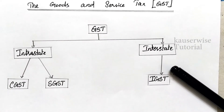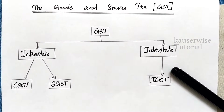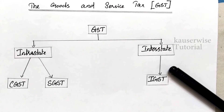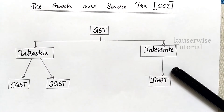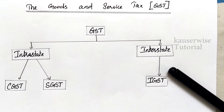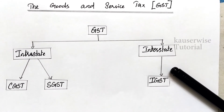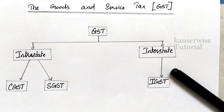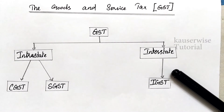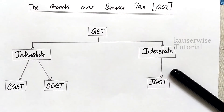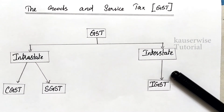The next one is interstate — between states. If a transaction takes place between two different states, it comes under interstate, and the buyer has to pay IGST, that is Integrated Goods and Service Tax. For example, assume you are a buyer belonging to Kerala and you want to buy goods and services from a supplier in Andhra. In this case, you pay 10% Integrated GST.